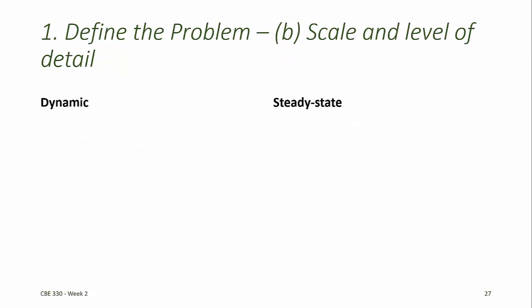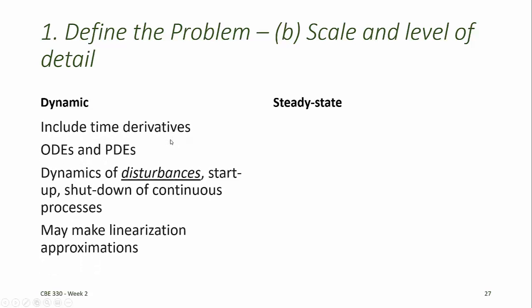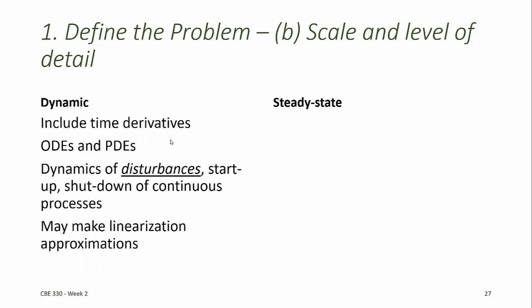When choosing the scale and level of detail of a model, we must also decide whether the model will be dynamic or steady state. Dynamic models generally include time derivatives and result in ODEs or PDEs describing the system. The dynamics of disturbances and startup and shutdown of continuous processes are usually described using dynamic models. Dynamic models might include linearization approximations to make a set of ODEs solvable.